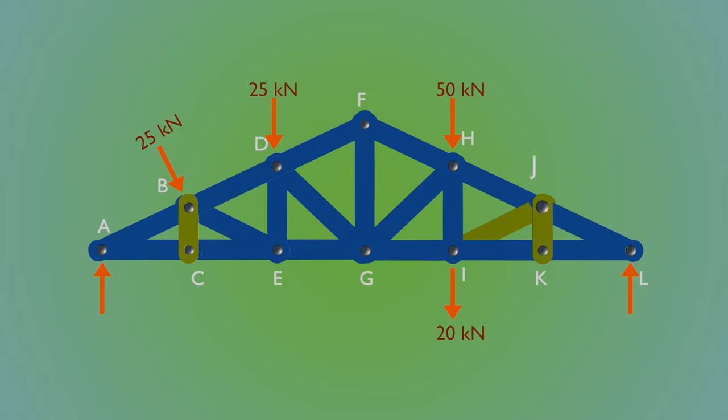Examining joints C, J, and K also shows that the forces in members AC and CE are equal. That the forces in members HJ and JL are equal, and that the forces in members IK and KL are equal.